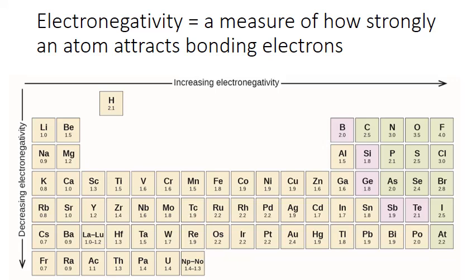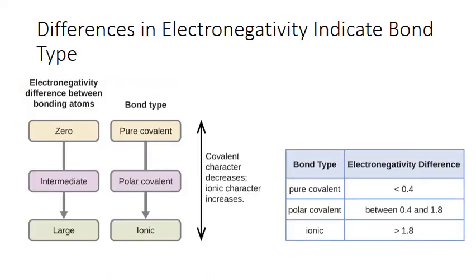Pairings between two nonmetals are usually much more equal in terms of electronegativity. As a result, both atoms hold on to the electrons and the electrons are shared. The magnitude of the difference in electronegativity between two bonding atoms can be used to predict the type of chemical bond that will form between them. When the difference in electronegativity is large — greater than 1.8 — the bond will be ionic.